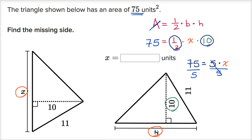And what's 75 divided by 5? Well, that is 15. So you get x is equal to 15.